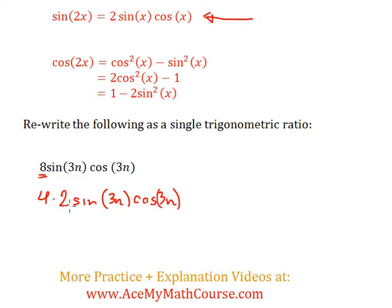Look at that. Now I have 2 sin something cos something, right? But now I still have a 3n instead of an x. So what I'll do in this case is make 3n equal to x. So I can rewrite the whole thing as 4 times 2 sin x cos x. After all, 3n is x.